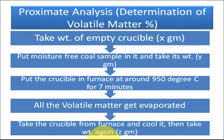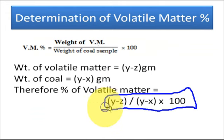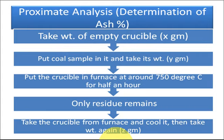To repeat the procedure for volatile matter: a known weight of moisture-free coal sample is taken in a weighed crucible. The crucible is placed in an electric furnace at 950 degrees centigrade for about 7 minutes. The crucible is then taken out, cooled in a desiccator, and weighed again — suppose this last weight is Z grams. By this formula we can calculate the volatile matter percentage.